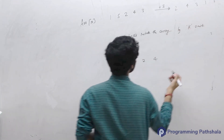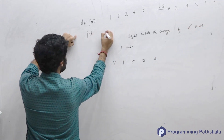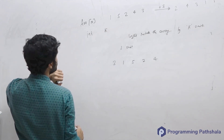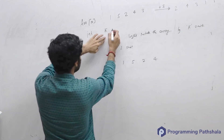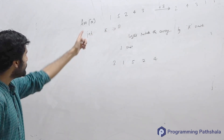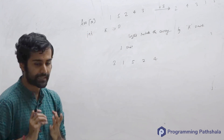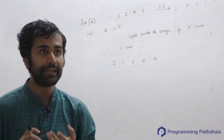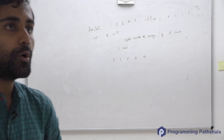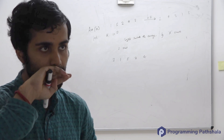The question is simple: you have been given an array and an integer k, and you can assume k will be greater than or equal to 0. You have to perform the right rotation of this array by k units. What is the most basic way to do this?